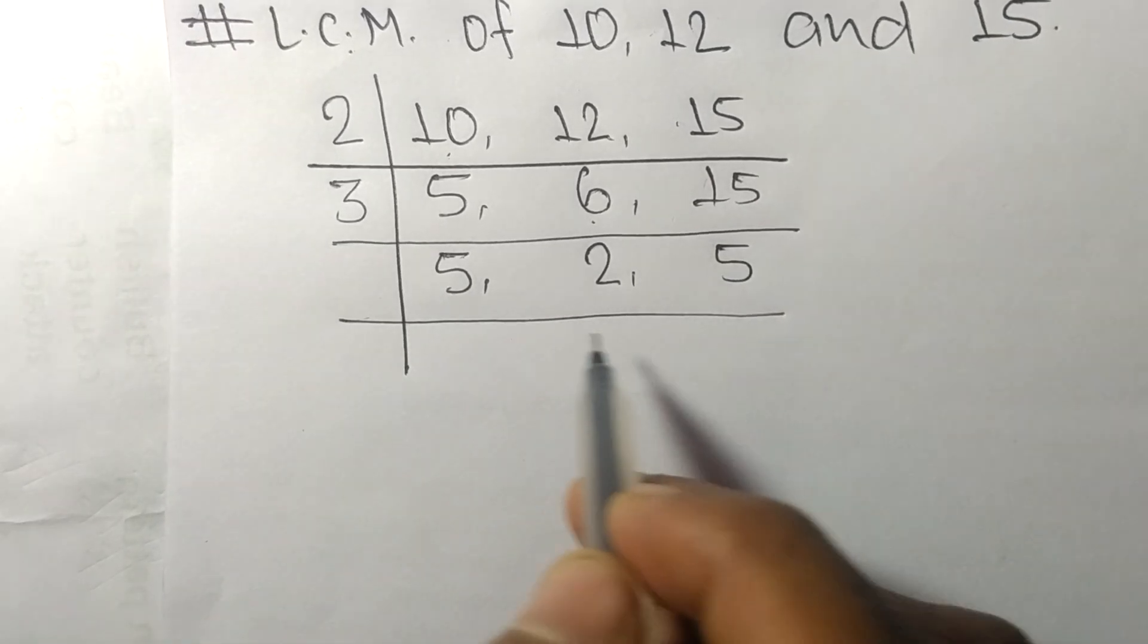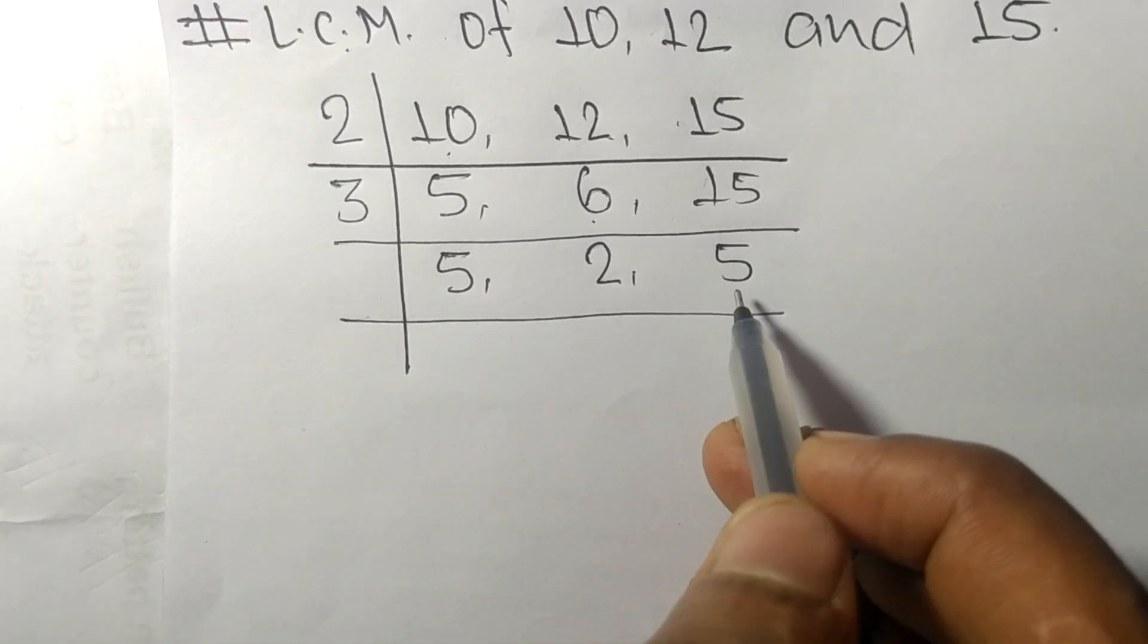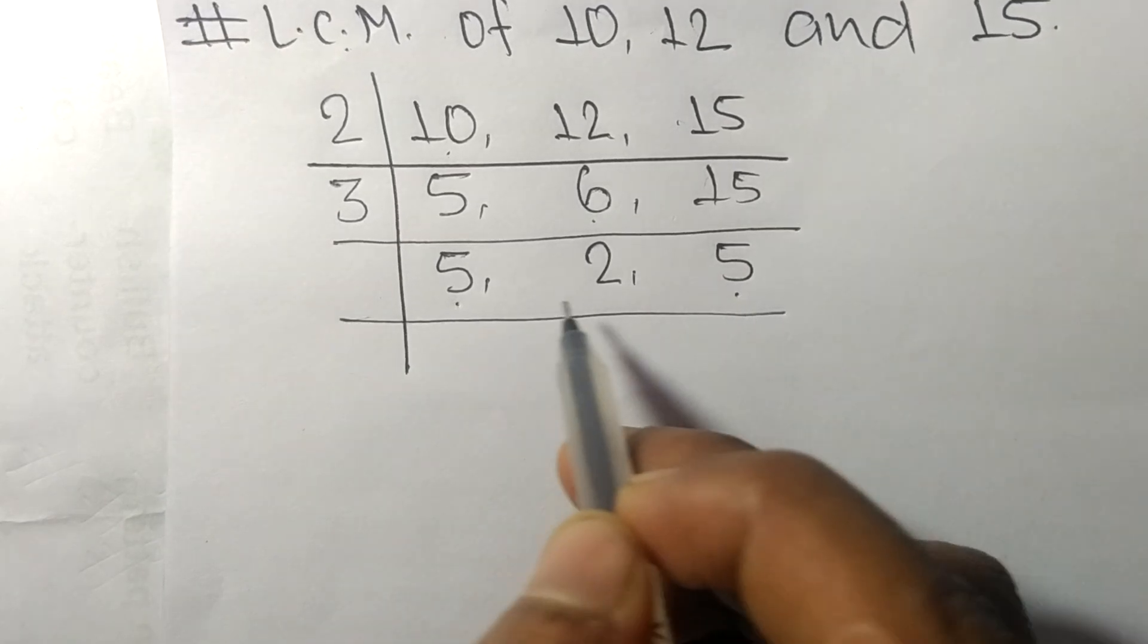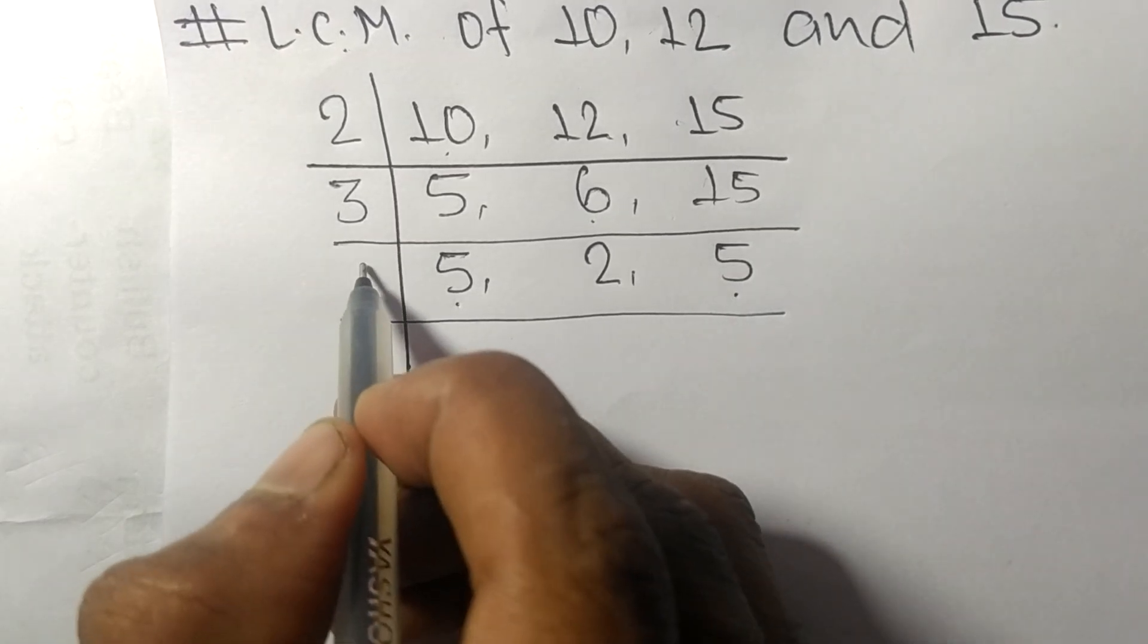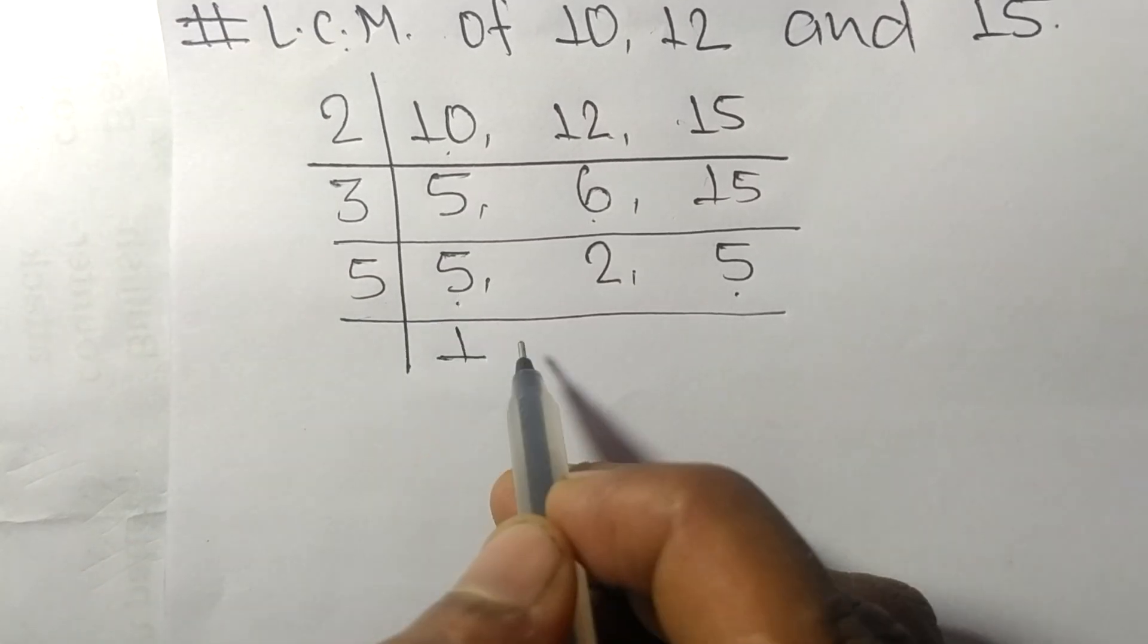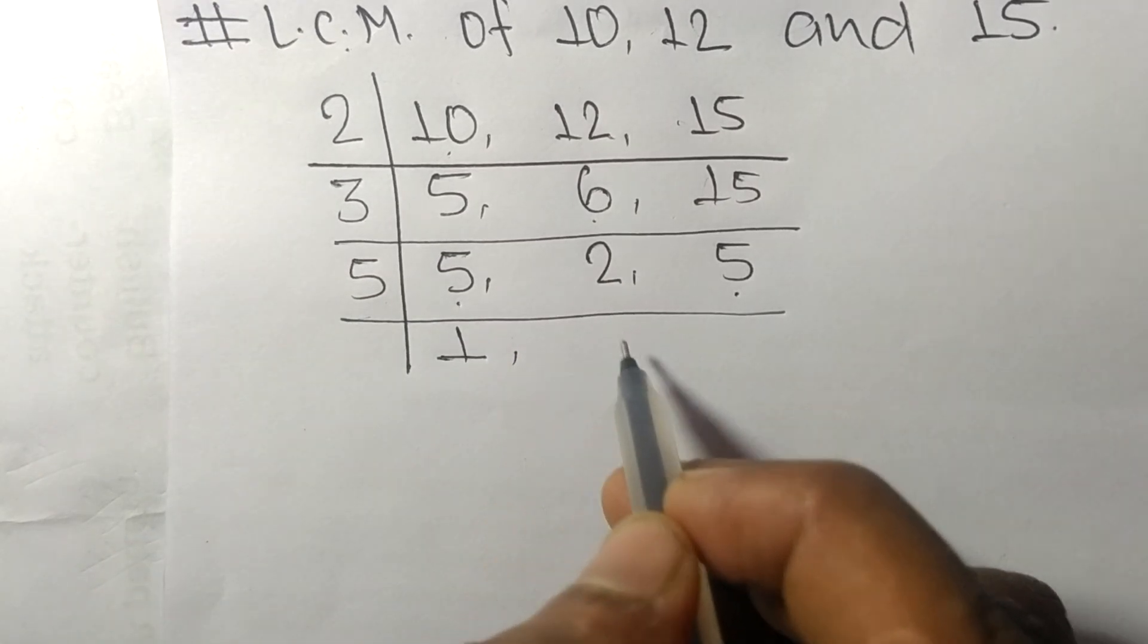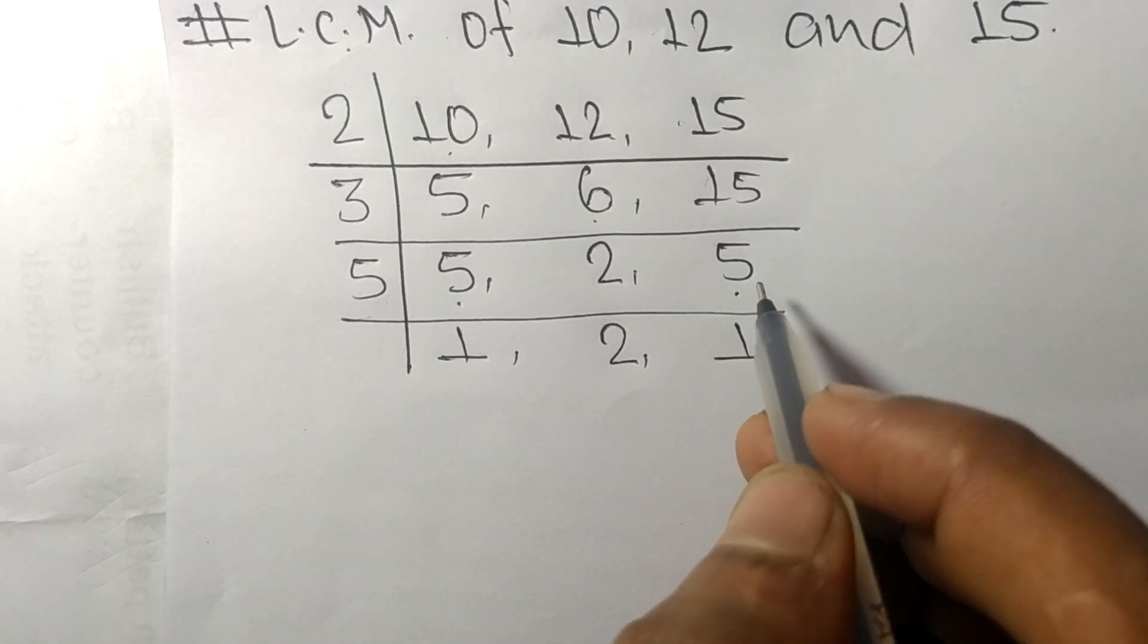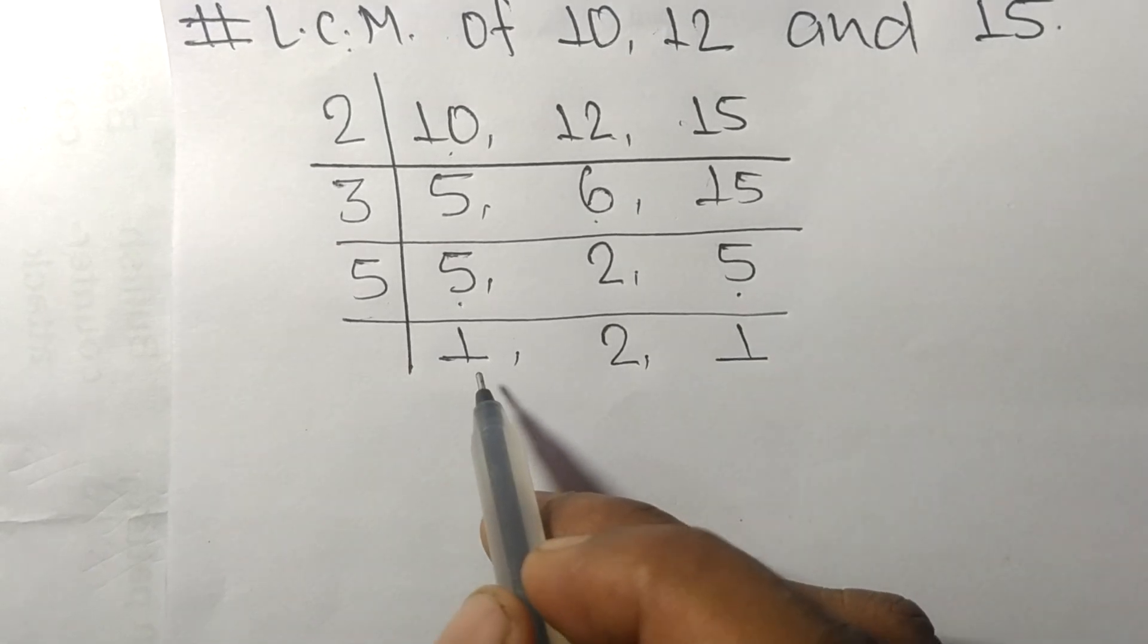Now we have 5, 2, and 5. Both 5s are exactly divisible by 5. 5 times 1 means 5. 2 is not divisible, so it remains the same. 5 times 1 means 5. Now we have 1, 2, and 1.